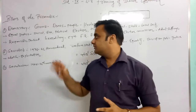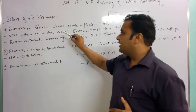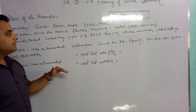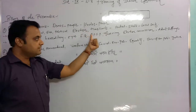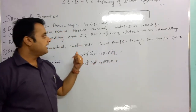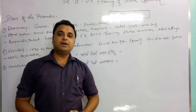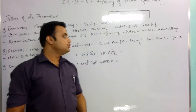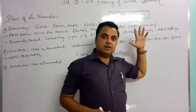In democracy, equal justice - social, economical, and political - is given to all people. We have formed fundamental rights in democracy, and also the directive principle of the state policy, which we will study in the next political science lesson. There is also an independent judiciary system, from the lower courts to the Supreme Court.